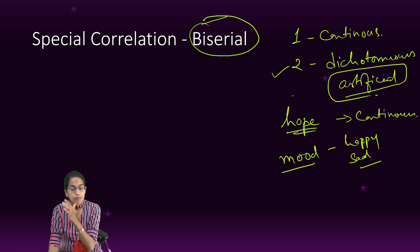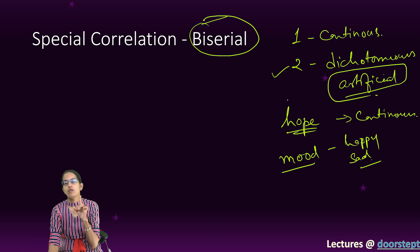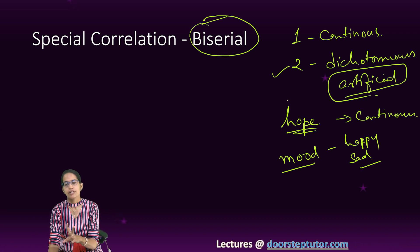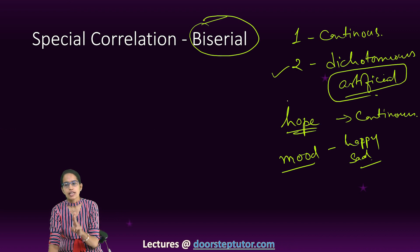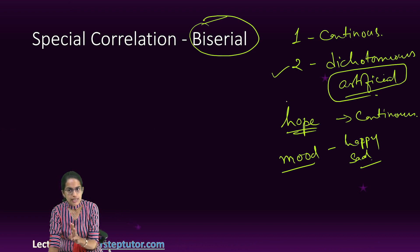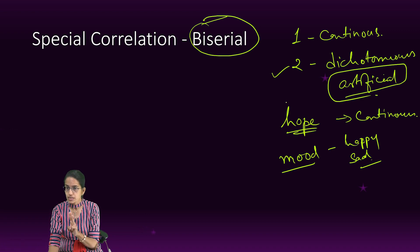I repeat again: biserial is a special form of correlation where one variable is continuous and the other variable is dichotomous. The second variable, which is dichotomous in the case of biserial, is an artificial dichotomous variable.